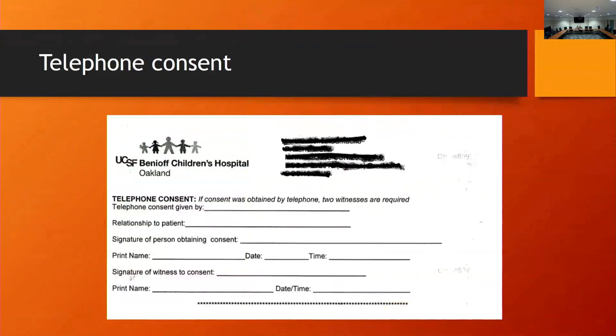The second way is the child who comes without a guardian. We have to find someone responsible and call them on the phone and document it. I'm not on the front line, so I don't know how often this happens. But doing chart audits, I see it happens a pretty good amount — about 10 percent.